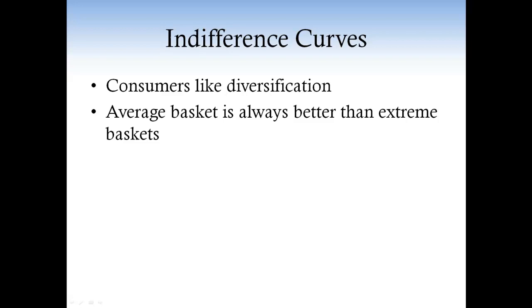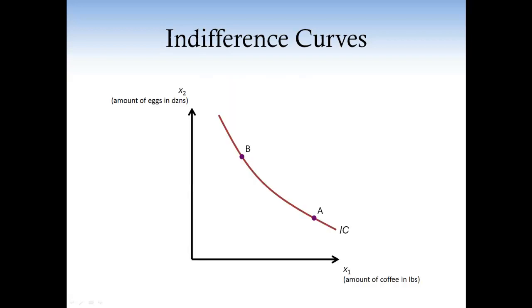Okay. First let me try to explain the assumption with our usual consumer, Mary. Take two baskets, A and B, on the same indifference curve. Now, take the basket C, that is the average basket between A and B. The assumption is that Mary likes C better than A and B. Is it clear?